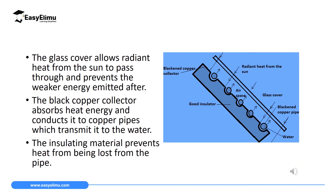The blackened copper collector's function is to collect rays of heat from the sun that pass through the glass window. In areas where there are no copper pipes, the copper collector collects the heat and conducts it into the copper pipes. Because black is a good absorber and copper is the best conductor, the collector receives heat and transfers it to the pipes containing water.